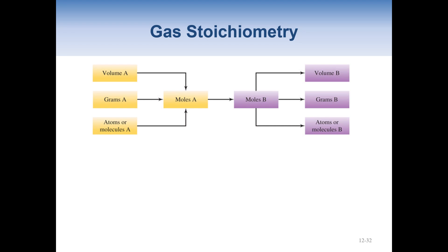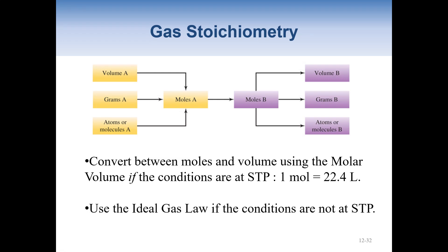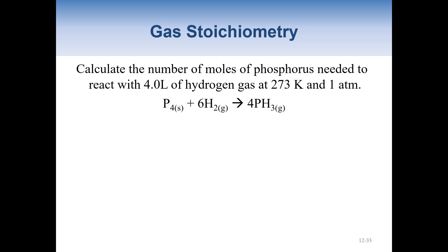Gas stoichiometry is very similar to regular stoichiometry except we are now incorporating volumes of gases at standard temperature and pressure. Our typical chart had molecules or grams of A, we'd do the mole ratio, then convert to molecules or grams of B. Now we can add in volumes if we are dealing with gases at STP. At standard temperature and pressure, one mole is equal to 22.4 liters of any gas. If it's not at STP, we'd have to use the ideal gas law. All problems for gas stoichiometry in this class are going to be at standard temperature and pressure.